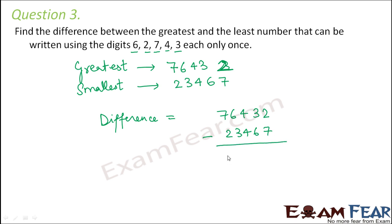So this would give you 52,965. So you had 76,432 minus 23,467 is equal to 52,965.